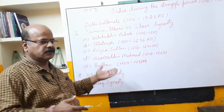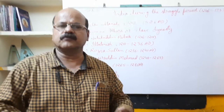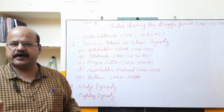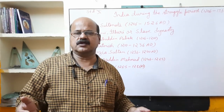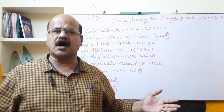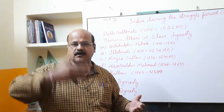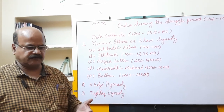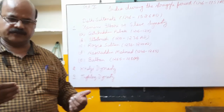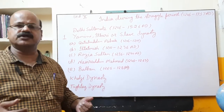When Iltutmish was about to die, he thought Ruknuddin Firuz would become king, but Ruknuddin Firuz's son was not fit to become Sultan — he was a tyrant and was unpopular. So Iltutmish declared Razia as his successor. The only shortcoming in Razia was that she was a woman, but she was very powerful. She abandoned the veil of purdah and came forward as a warrior, which made her very unpopular among the Turkish nobles and aristocrats. They united against her.